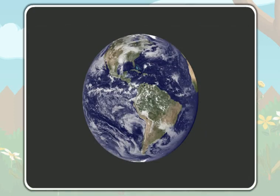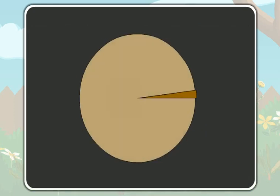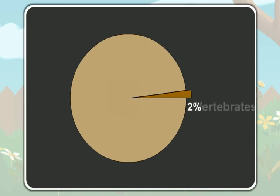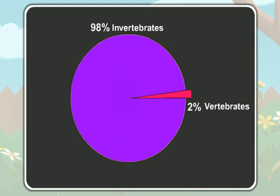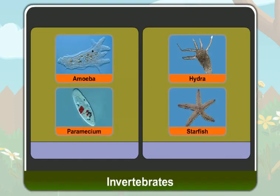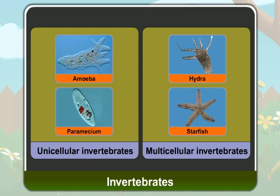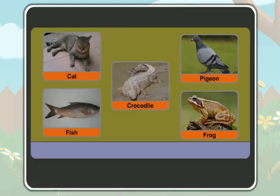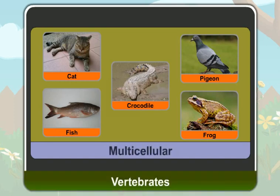Out of the total animals on the earth, only 2% of the animals are vertebrates, while 98% of the animals are invertebrates. So, the number of vertebrates is very few compared to the invertebrates. Vertebrates are bigger than invertebrates. Some invertebrates are unicellular and some are multicellular, but all the vertebrates are multicellular.